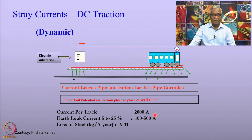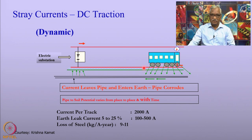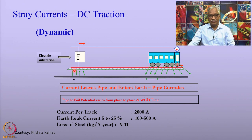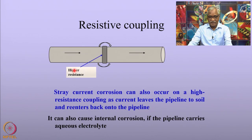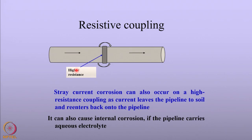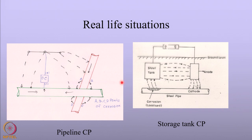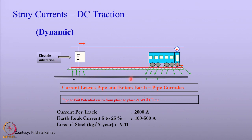With this kind of current, about 9 to 11 kg per ampere year of dissolution can happen at that location, leading to very quick leaks in the pipelines. This kind of corrosion is dynamic in nature because it occurs only when the train passes through, and other times it does not happen. This is different from what was seen earlier — static stray current corrosion, where corrosion occurs all through the day.